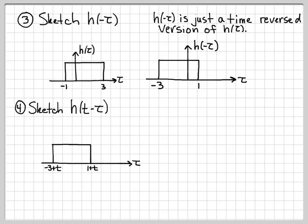Step 4: sketch h(t minus τ). This is the part where people typically struggle the most. The way to approach it is to look at the picture of h(minus τ) and then add t to the points on the axis. So minus 3 becomes minus 3 plus t, and 1 becomes 1 plus t. This gives h(t minus τ) along the τ axis with a shift of t. For now, I haven't drawn the origin because depending on the value of t, it could be anywhere relative to the rectangle — this sketch is for a general value of t.